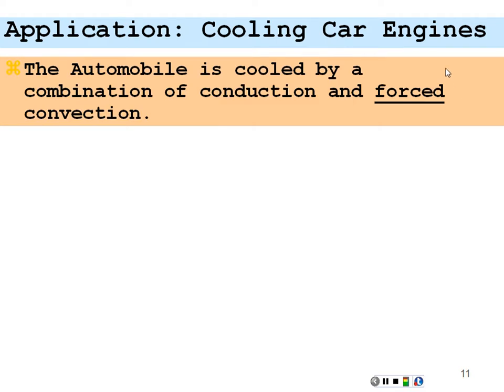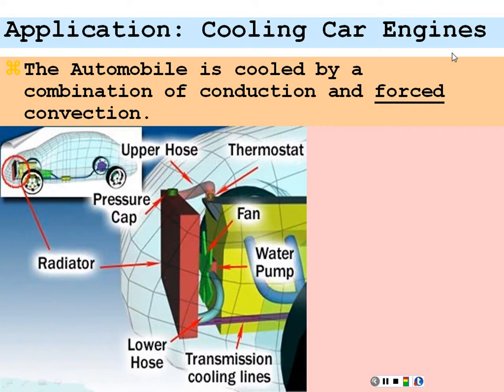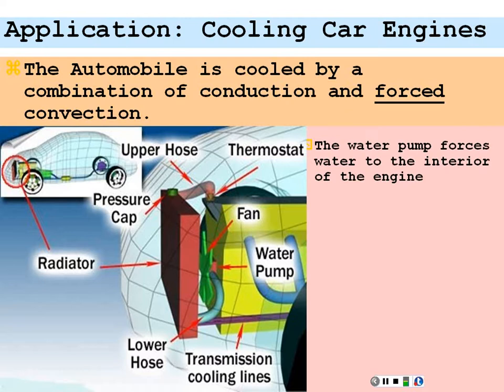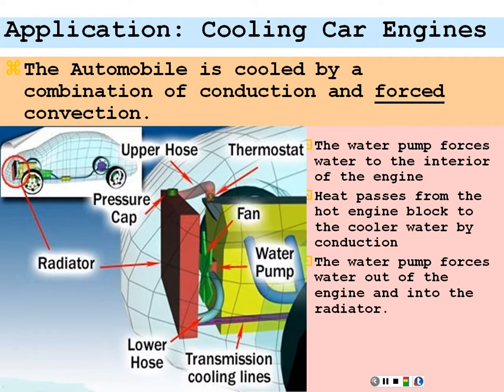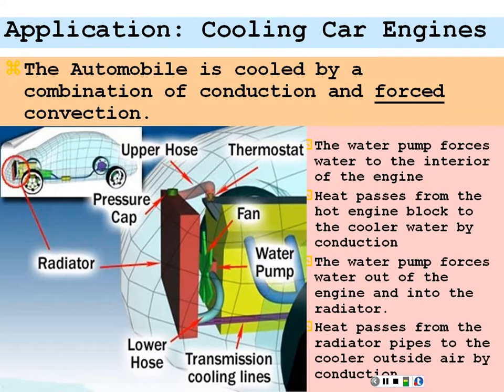Here's another example of convection, forced convection, and also conduction. Cooling a car engine. We can imagine first we have a water pump which is forcing water into the interior of the engine allowing the heat to pass from the hot engine block to this cooler water, and then the water is forced out of the engine into the radiator. So we have a forced convection in that sense of forcing the heated substance to another location. The radiator allows the water to heat up the air and then the air is blown away. So the radiator allows conduction to the air. So we have a forced convection of the water through the water pump and cooling the car engine.